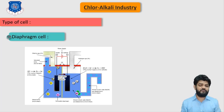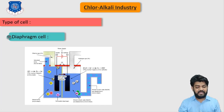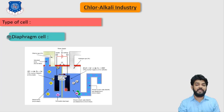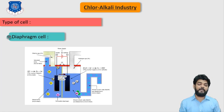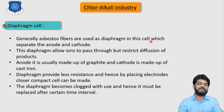The diaphragm in this cell is generally made of fiber material so that it only allows different ions to pass. The anode is generally made up of graphite while the cathode is usually made up of cast iron. Now let's understand the process description for the diaphragm cell.